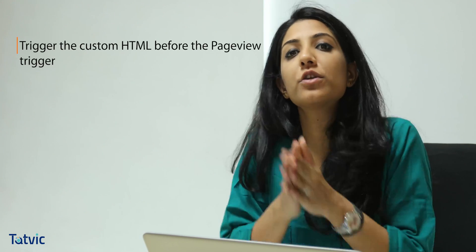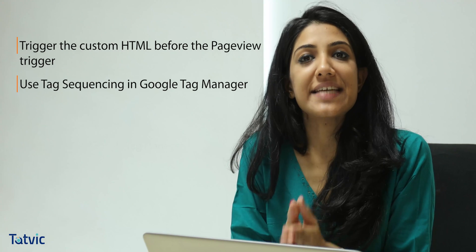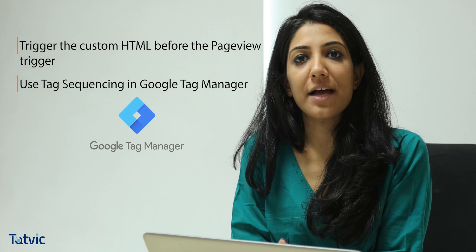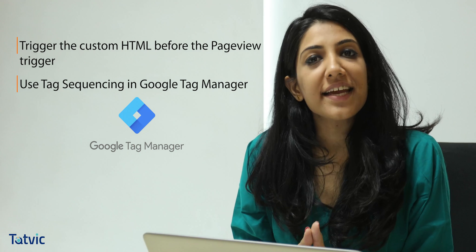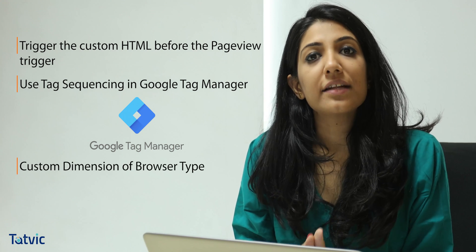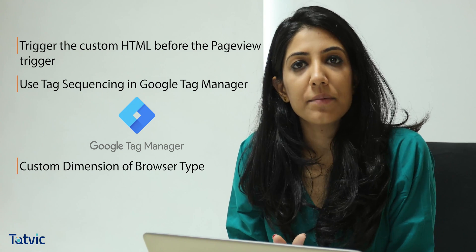There are two things you need to ensure: the first is that the custom HTML tag set to identify the in-app browser is triggered before the page view tag. You can use the tag sequencing feature in Google Tag Manager for this. The second thing is that the value of browser type is passed in the custom dimensions set in the Google Analytics admin panel.